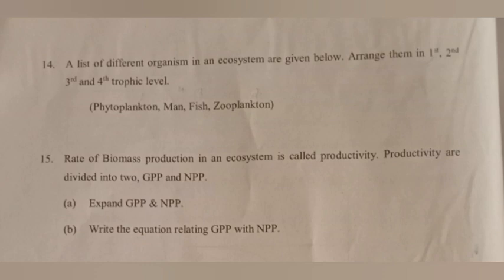Question 14: A list of different organisms in an ecosystem is given below — arrange them in the first, second, third, and fourth trophic levels: phytoplankton, fish, man, zooplankton. Answer: First trophic level — phytoplankton; second trophic level — zooplankton; third trophic level — fish; fourth trophic level — man.